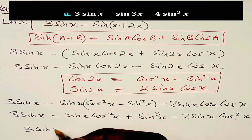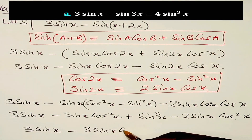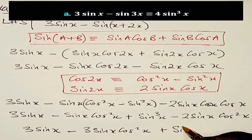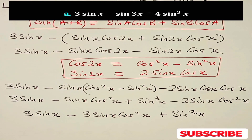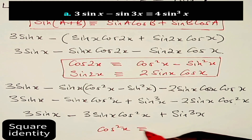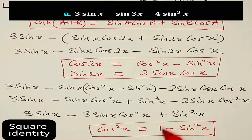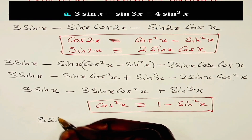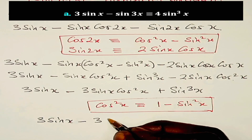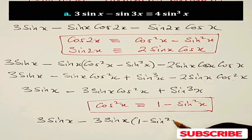Then we have 3 sine x. Adding the like terms gives minus 3 sine x cos²x plus sin³x. At this stage we shall use the square identity: cos²x is identical to 1 minus sin²x. So wherever there is cos²x we shall write 1 minus sin²x. The left hand side becomes 3 sine x minus 3 sine x multiplied by (1 minus sin²x) plus sin³x.